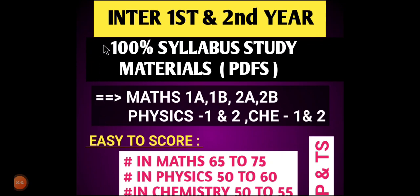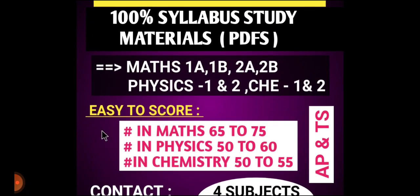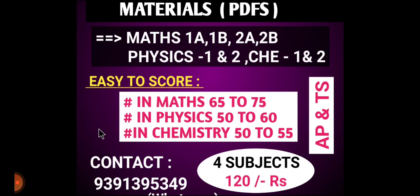You guys will have good information — our intermediate first year and second year 100% study materials are in PDF form. We have maths 1A, 1B, 2A, 2B, and next physics first year, second year, and chemistry in PDF form. If you have these materials, you can easily score 65 to 75 in maths, and 50 to 55, up to 60, in physics and chemistry.